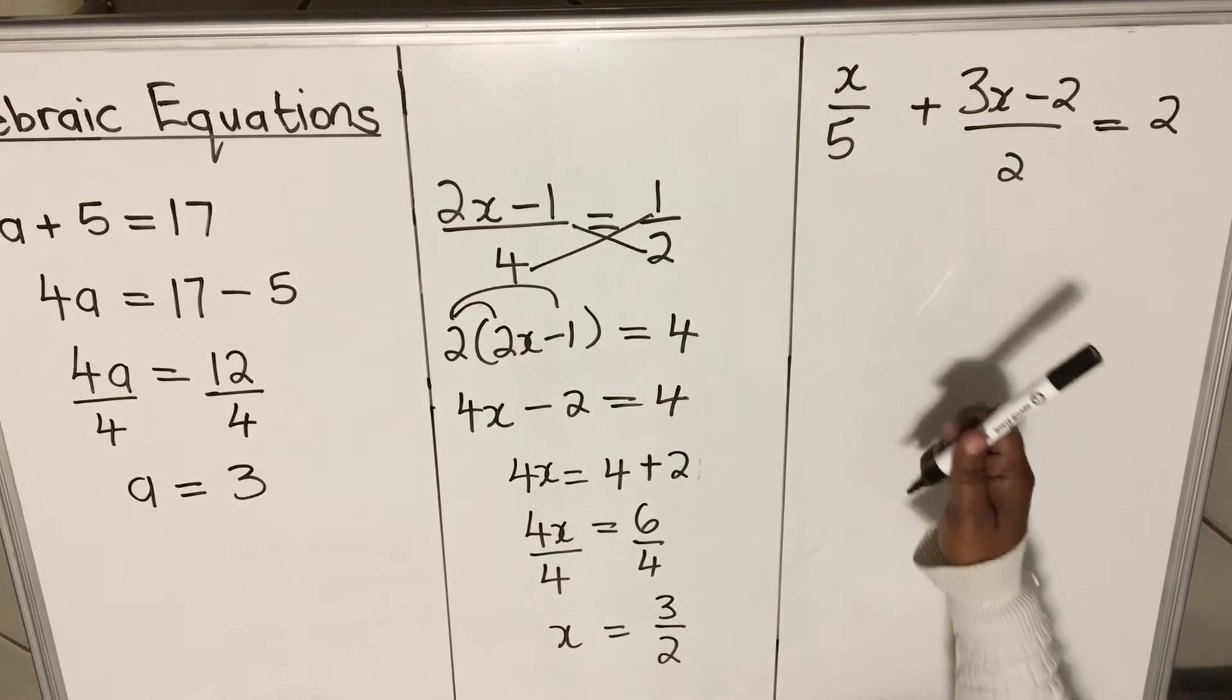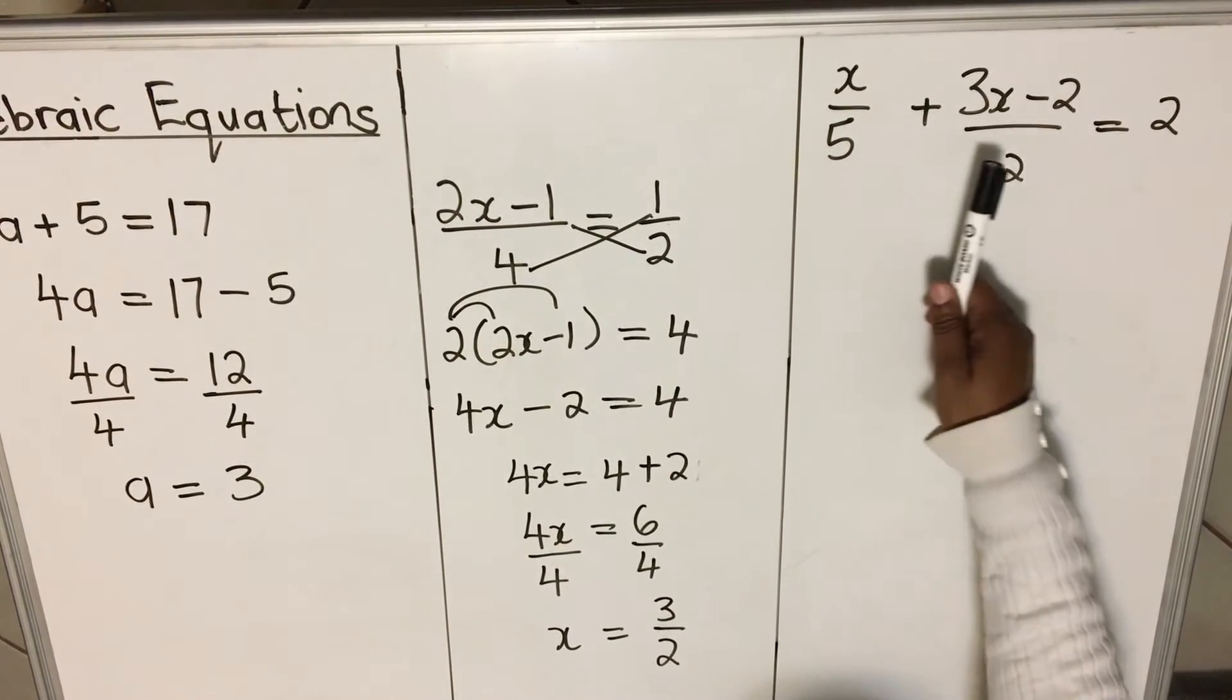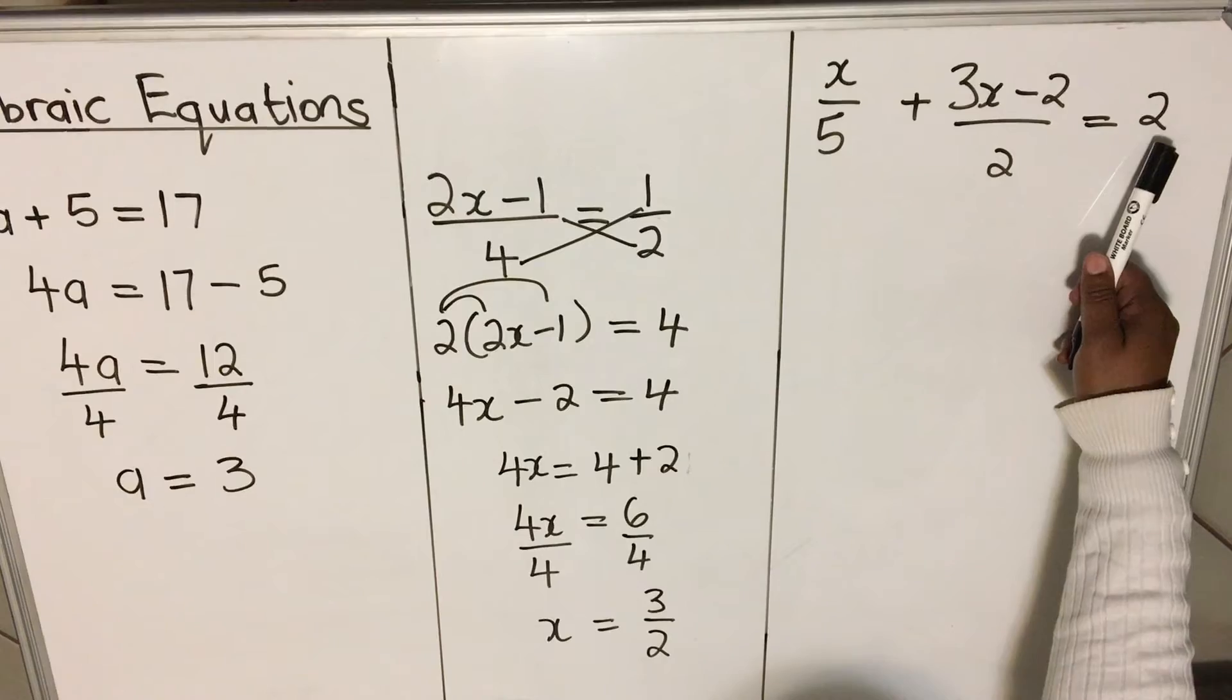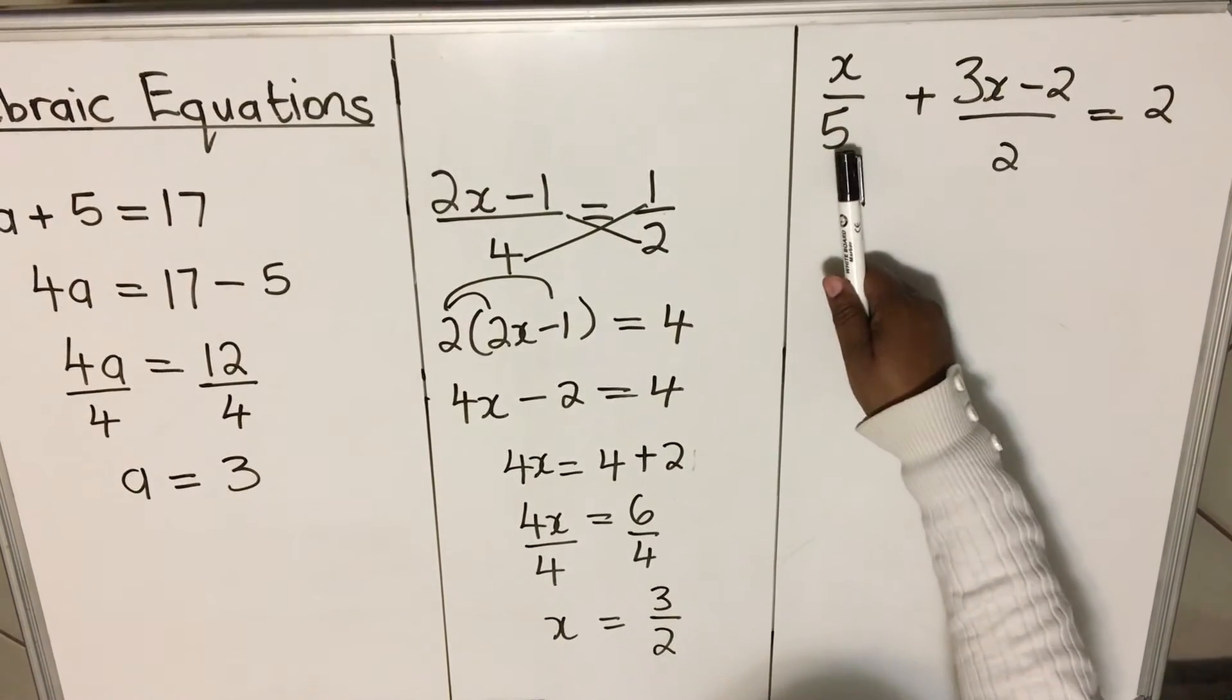This last example, we are dealing with fractions. We have a fraction here, another fraction, and equal sign and equal 2. Now, you can't cross-multiply because we have two terms.